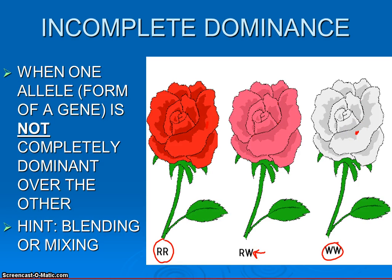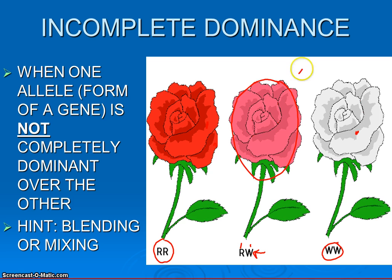But notice again in heterozygotes, they have both red and white instructions. So they come out just as if we were mixing red and white paint — they come out pink in coloration. That red is not quite fully dominant over the white. Any time we get a unique new coloration like this — a blend — that would be incomplete dominance.